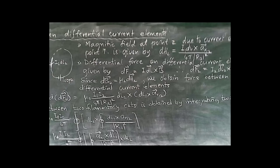Simplifying, the total force F = (μ₀ i1 i2) / 4π times the double integral of (a_r12 cross dl1) divided by r12 squared, dotted with dl2. This is the relation for differential force due to differential current elements. Please note this formula — it is very important and a frequently examined question. This concludes force between differential current elements.